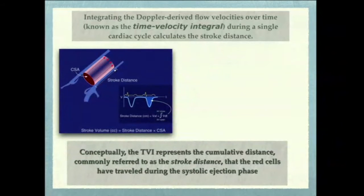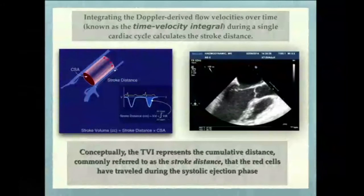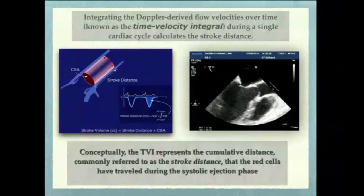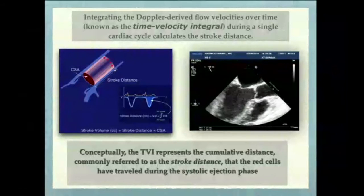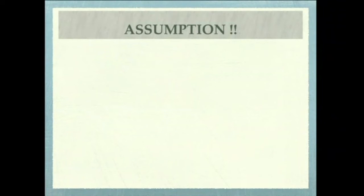Being a cardiac anesthesiologist with some ideas about echo, you know what pulse wave and continuous wave are. When we talk about the mid-esophageal long axis view, the RBCs — the distance travelled by the RBCs once they enter the LVOT or the aortic outflow tract — we consider that particular segment. The area distance travelled by that RBC over that time is called the VTI, measured by velocity time integrals. We need many assumptions here.